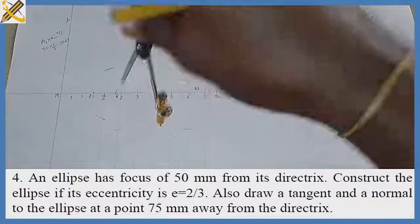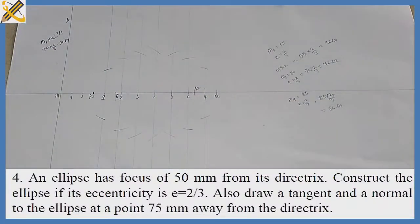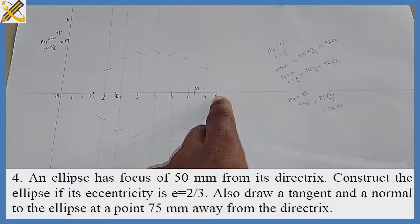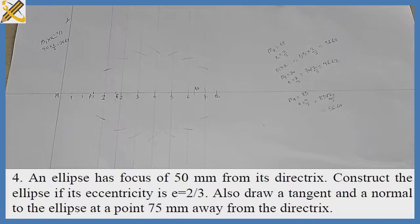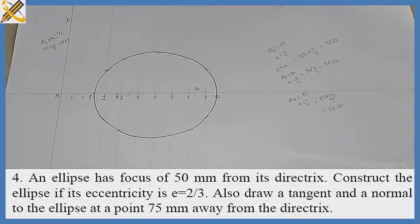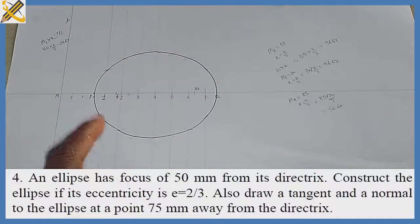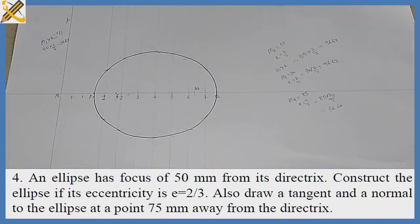With compass measuring 56.67, on focal point F1 I strike an arc at the top and at the bottom. Now I have all the traces for my ellipse. I pick my French curve or flexible curve and draw the ellipse passing through the vertices at both point P and point Q. I draw the curve through the points where my arcs intersect the perpendicular lines.